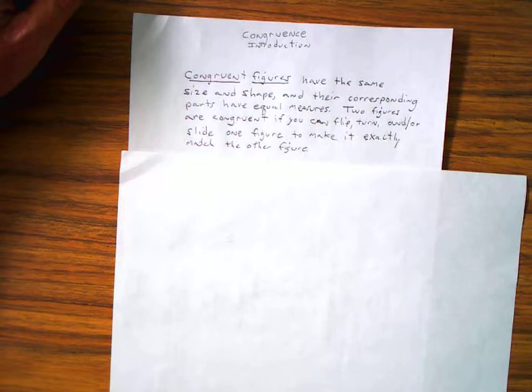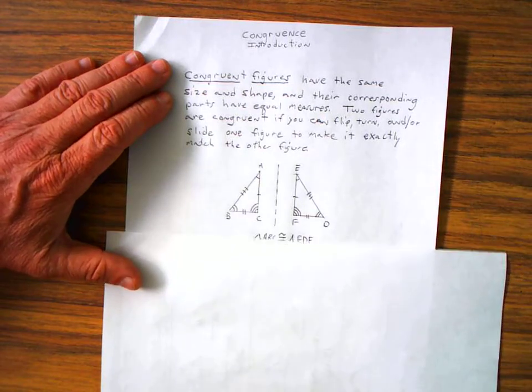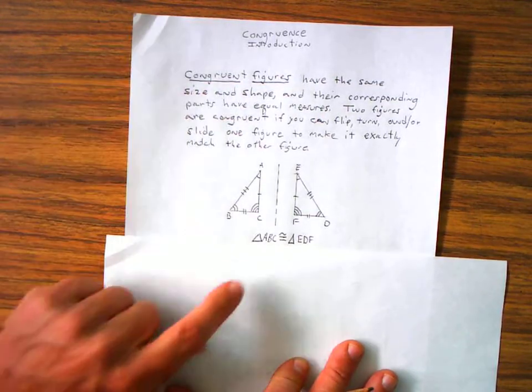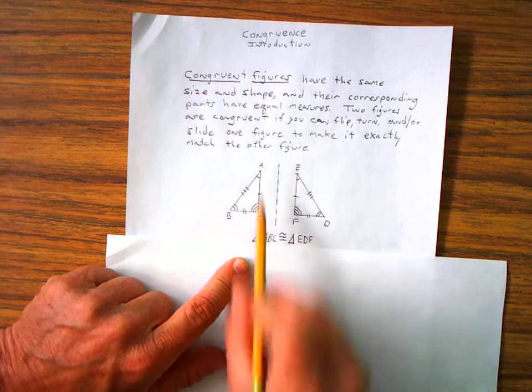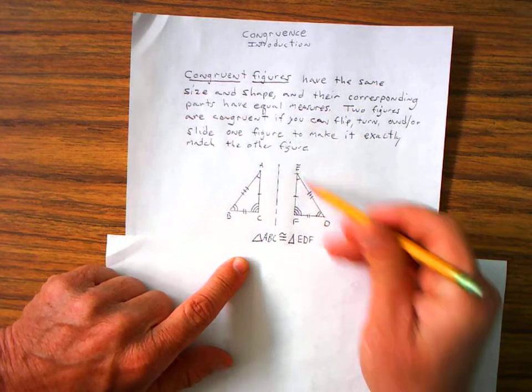Two figures are congruent if you can flip, turn, and or slide one figure to make it exactly match the other figure. I've drawn two triangles here. There's triangle ABC and triangle EDF.